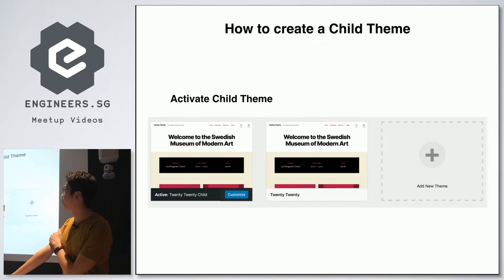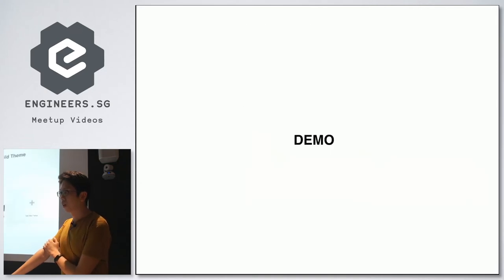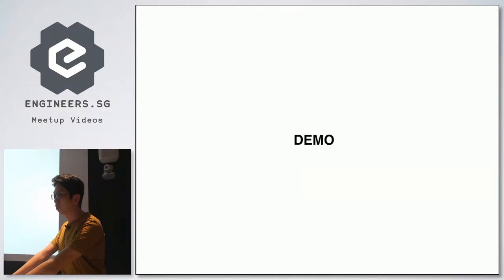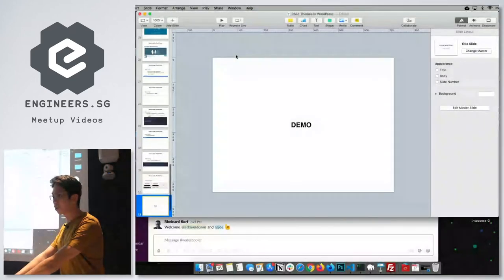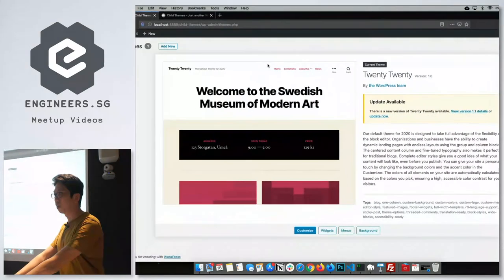Once you're done, you can activate your child theme in the Appearance → Themes page in your WordPress admin. Now I'll go through a quick demo starting with using a plugin to create a child theme.